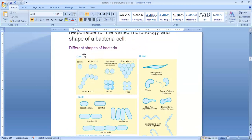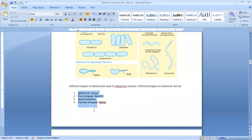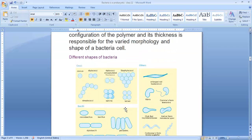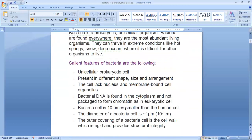So the bacterial cell is found in 4 different types of shapes and these are the structure of the shape and these are the name. Then let us see the components of the bacterial cell. First, let us see the salient features.